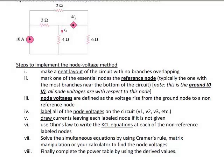The node voltage method is a systematic approach to identifying voltages, currents, and power in a circuit. Here are the steps: Step one, make sure you have a neat layout of the circuit with no branches overlapping. Step two, mark one of the essential nodes as the reference node — typically the one with the most branches near the bottom. In this class, I always make the ground node the bottom of the circuit. It's not wrong to choose another node, but to be consistent, we always use the bottom as ground.